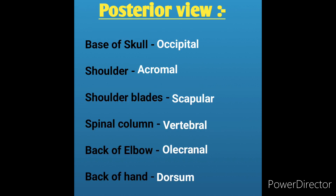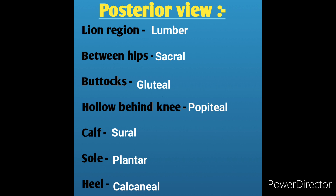Base of skull: occipital. Shoulder: acromial. Shoulder blades: scapular. Spinal column: vertebral. Back of elbow: olecranal. Back of hand: dorsum. Loin region: lumbar. Between the hips: sacral. Buttocks: gluteal. Behind knee: popliteal. Calf: sural. Sole: plantar. Heel: calcaneal.